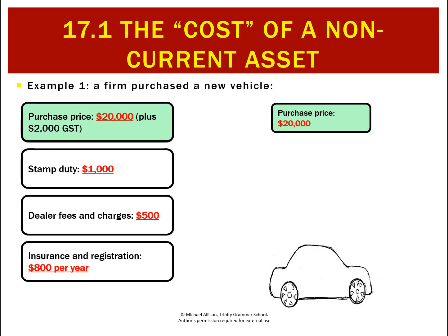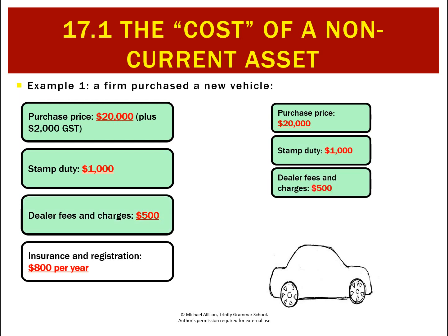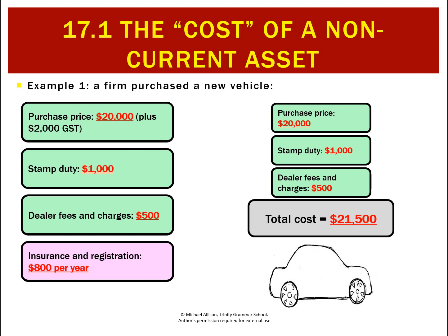We add any other cost required to get the car in a condition and location to start earning revenue that will last a lifetime. So we include the stamp duty — that's a one-off — and the dealer's fees and charges, also a one-off. We leave out the insurance and registration, because even if it's debatable whether that's required to get the car ready, it says it's paid per year so it won't last the asset's entire life. The total cost of this car is $21,500.